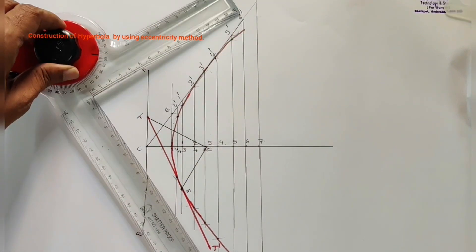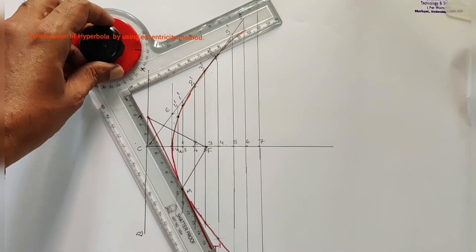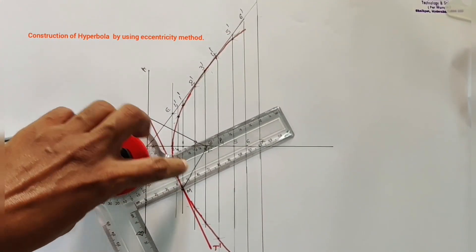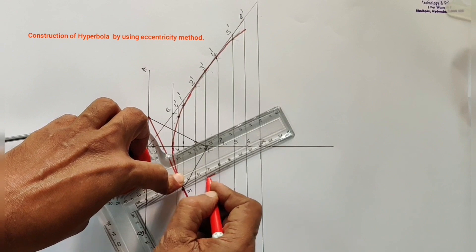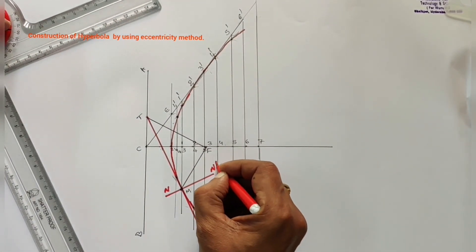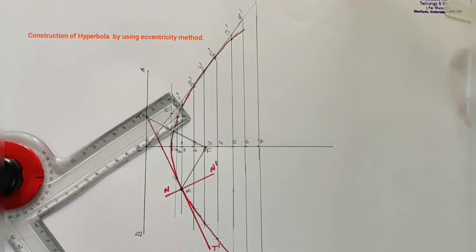This is tangent. Perpendicular to tangent, without disturbing the mini drafter, draw a line. This line is normal. N, N dash.